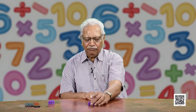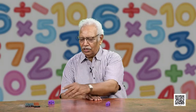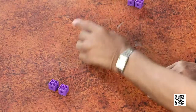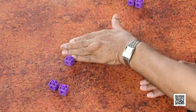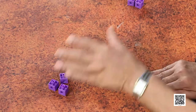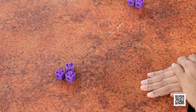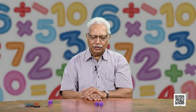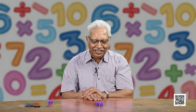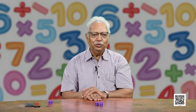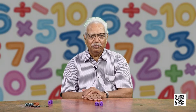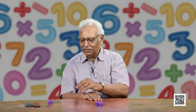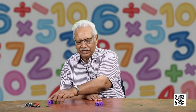Similarly, if these are 2, then if I add 1 to it, how many of these are there? Can you count? These are 3. So, 2 and one more make 3.